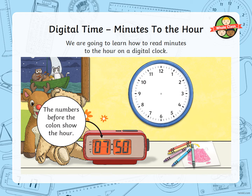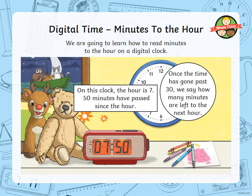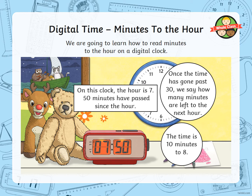Remember, the numbers before the colon show the hour, and the numbers after the colon show the minutes past the hour. So on this clock, the hour is 7 and 50 minutes have passed since the hour — it's 7:50. So the time is 10 minutes to 8.